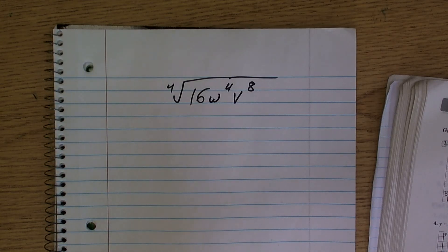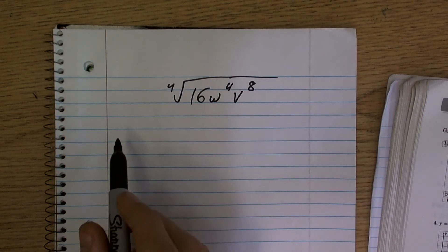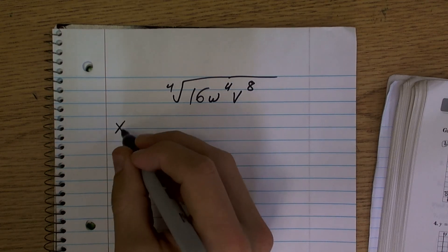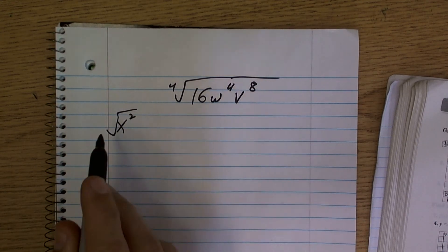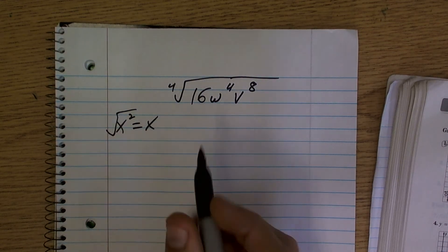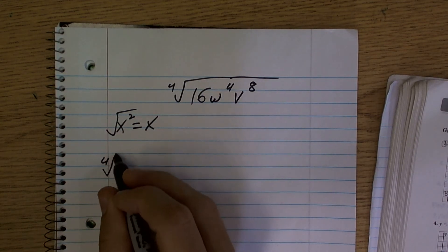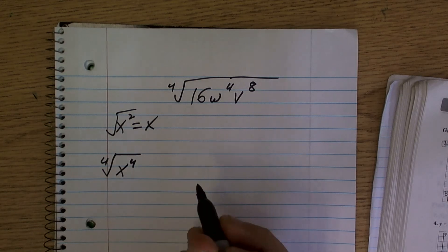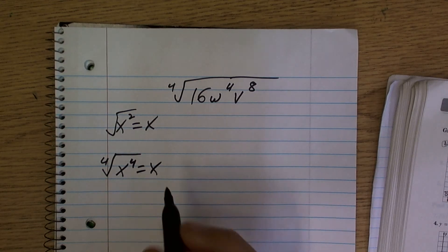Okay, so for this problem it's a little bit different. As you remember when we were dealing with x squared, we said that the square root of x squared equals x, right? So now since we're dealing with the fourth root, we need to know that the fourth root of a number to the fourth power is going to equal x.